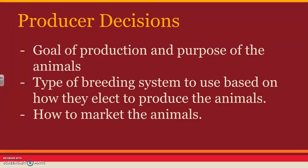Different decisions that producers have to make: first of all, they have to decide what their goal of production is and what their purpose for the animals is. For cattle, for example, you can either have dairy cattle or you can have meat cattle. Same thing with goats — you can have meat goats or dairy goats. They also have to decide what type of breeding system they want to use, which is really based on how they elect to produce the animals, and they also have to decide how to market those animals.